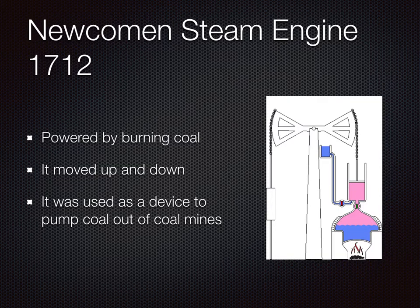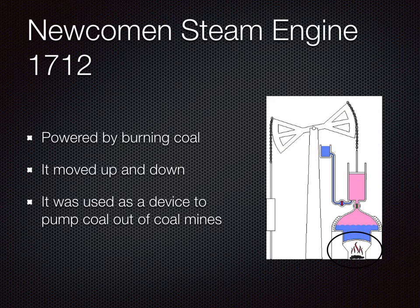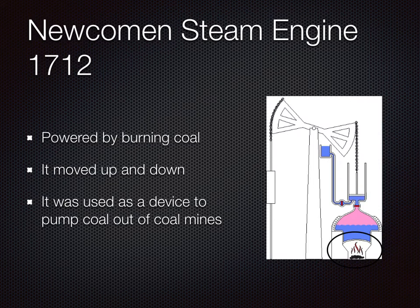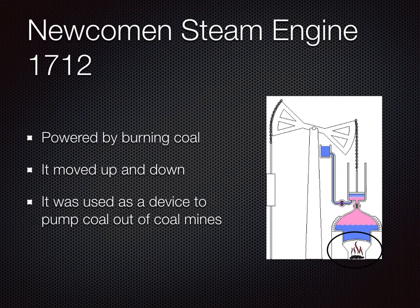The initial steam engine used at the beginning of the revolution was patented by Thomas Newcomen. It was powered by burning coal and it moved up and down — the coal would be burned at the bottom. It was a machine used to pump out water from coal mines so that they could get more coal. That was the purpose the steam engine was originally designed for.